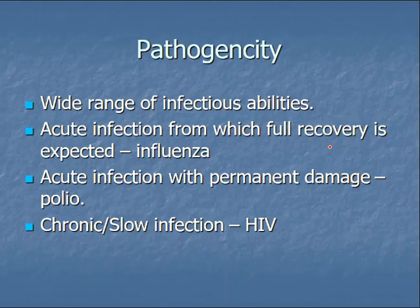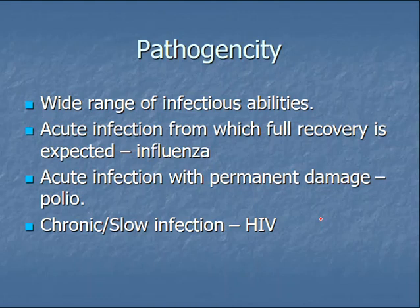Viral pathogenicity covers a wide range. Some infections are acute with expected full recovery — if you get the flu, you typically recover. Other acute infections cause permanent damage, such as polio, where someone typically has long-term loss of muscle function and difficulty walking, and can even have difficulty breathing in severe cases. Chronic or slow infections stick around — HIV is an example. Some viruses, like chickenpox, once contracted will stay dormant and can reappear later in life as shingles.